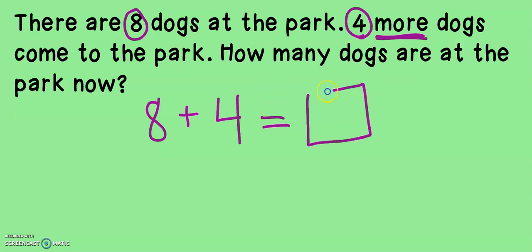I'm looking for my ending number, my total. How many dogs are at the park now? Let's add eight plus four more. Eight, nine, 10, 11, 12. So there are 12 dogs at the park.